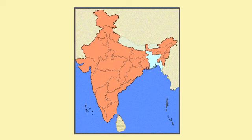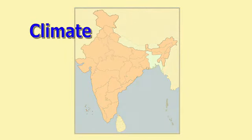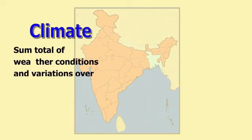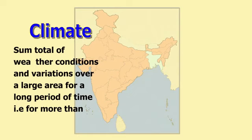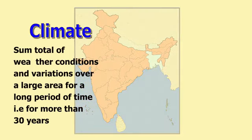In this video we shall study the climate of India. The word climate refers to the sum total of weather conditions and variations over a large area for a long period of time, that is for more than 30 years. So if we study the weather conditions of India for a period of more than 30 years, we come to a conclusion that the climate of India is monsoon type.